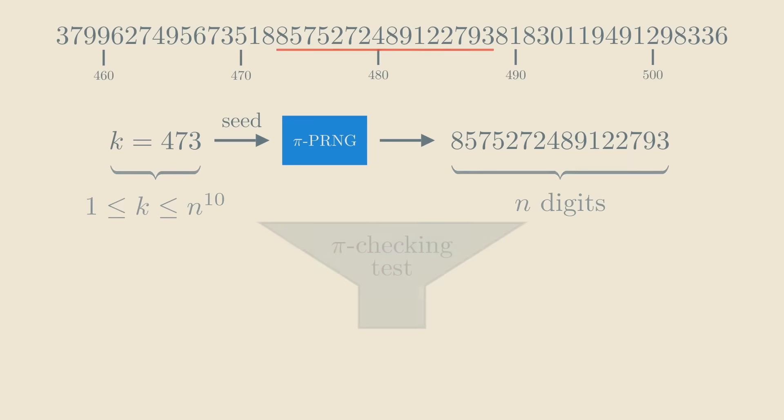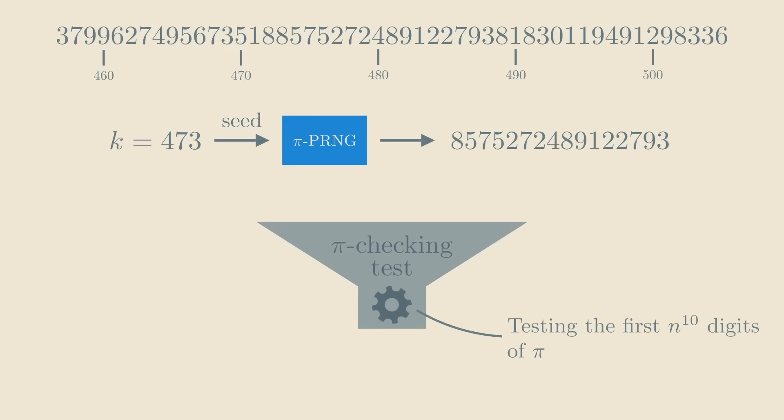How would you design a statistical test that could distinguish between the bits from this generator and truly random ones? You could try to upgrade our earlier pi-detecting test. Namely, generate n to the 10th digits of pi and try to find the input string in it.